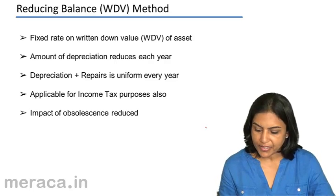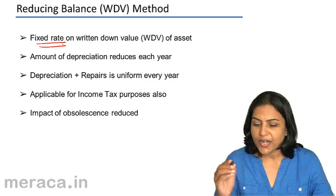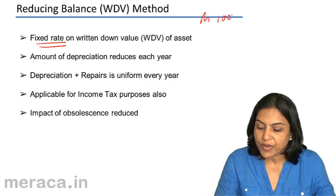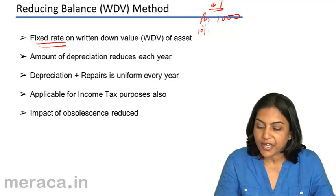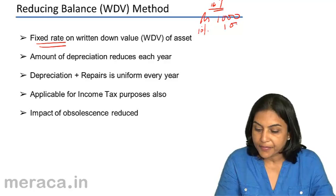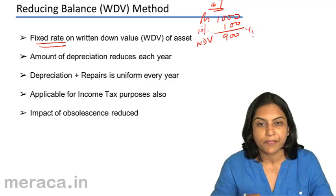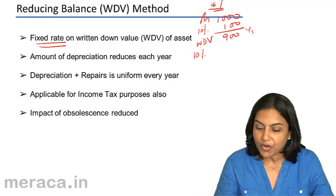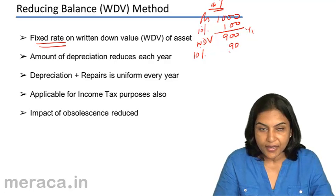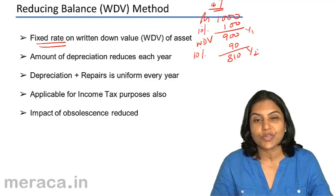Under the reducing balance method, a fixed rate on the written down value of the asset is charged. For example, if the asset costs rupees 1,000 and the fixed rate is 10%, in the first year depreciation is 10% of 1,000, which is 100. Therefore, the written down value at the end of year 1 is 900. In year 2, depreciation is again 10% but on the written down value — 10% of 900 is 90 — and the written down value at the end of year 2 is 810.